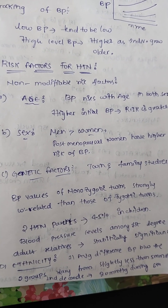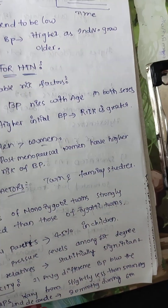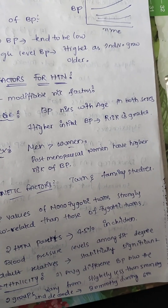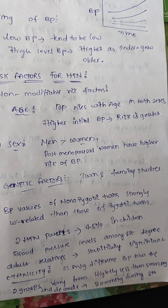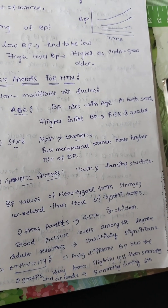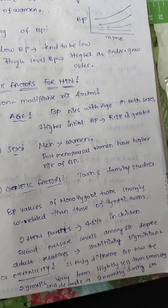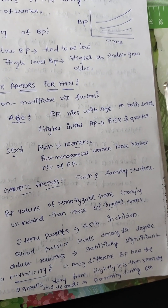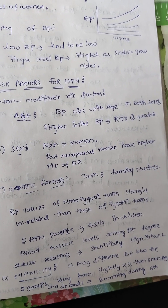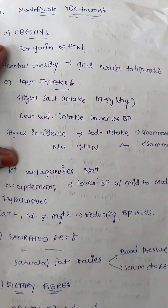Blood pressure levels among first-degree adult relatives are statistically significant, so family history should be asked in cases of hypertension. Regarding ethnicity, average differences in BP between groups vary from slightly less than 5 mmHg in the second decade to 20 mmHg during the sixth decade.